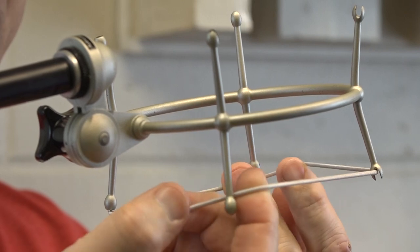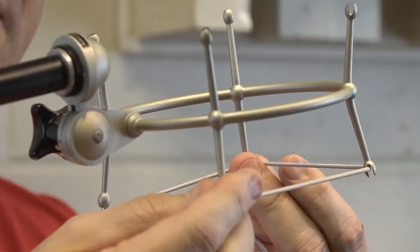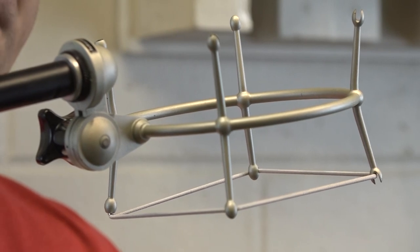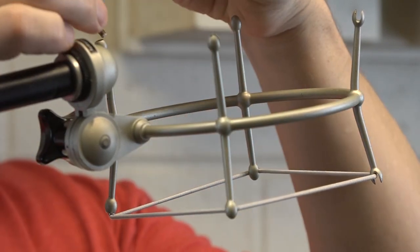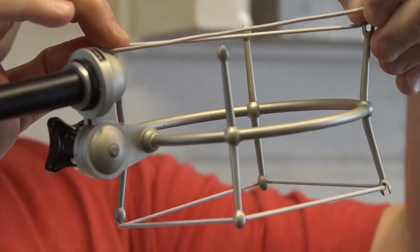And then stretch these two out and put it on these two sides like that, so it makes a square. Okay, do the same thing on the top. Put that into the little hole, stretch it across.